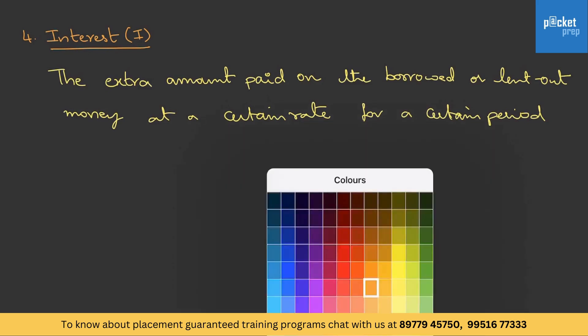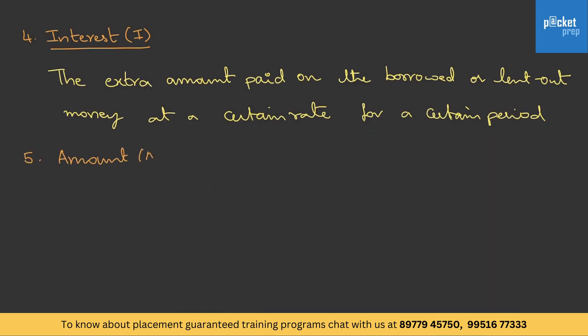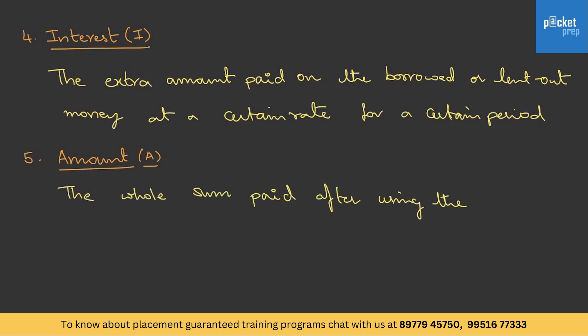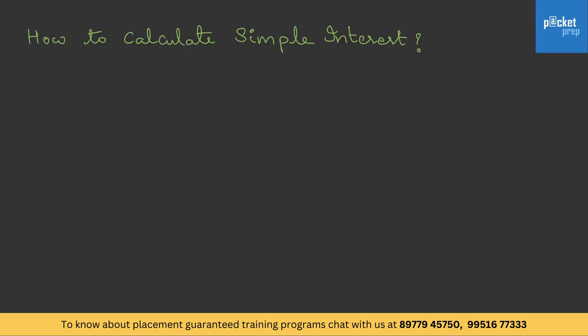The last term is Amount — it is the whole sum paid after using the money. We can think of Amount as the sum of Principal and Interest. Now the question is: how do we calculate the simple interest? For this we have a formula.